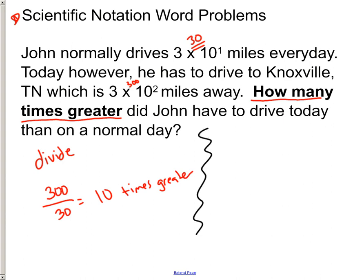But if they're needing to see your work, you might as well put it in scientific notation. 3 times 10 to the second divided by 3 times 10 to the first. Divide your front numbers - 3 divided by 3 is 1. And subtract your exponents - 2 minus 1 is 1. So it's 1 times 10 to the first times greater.